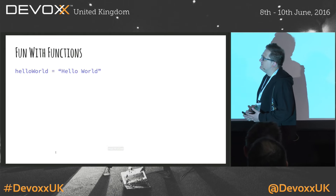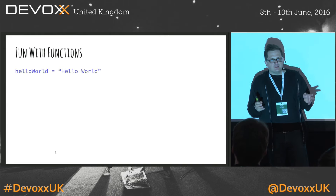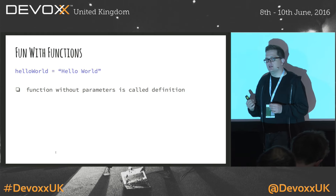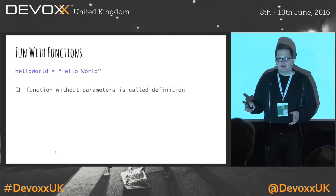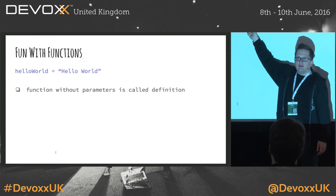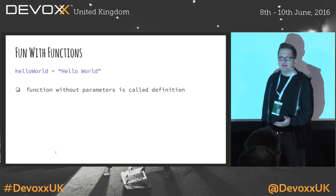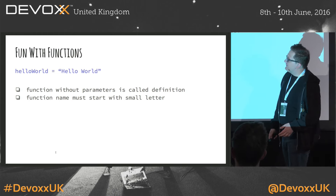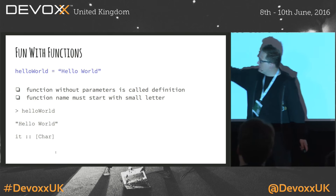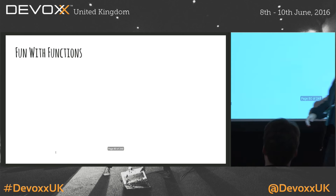So, functions. Let's try something simple — Hello World. Hello World can be done easily in Haskell. If a function doesn't take arguments, it's called a definition. See how nice Haskell is — there is no 'public void whatever' up front, no 'String' up front, no 'def' in Scala. There is just your function name, equal sign, and a value. That's all you need to create the simplest function that returns a hello world string. One small thing: a function always has to start with a small letter. In the REPL, calling hello world gives us a string, and we see that a string is a list of chars.